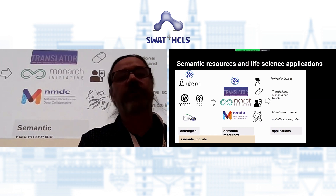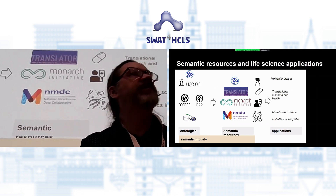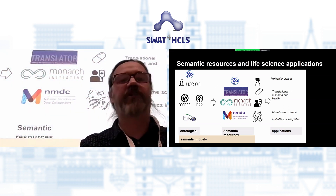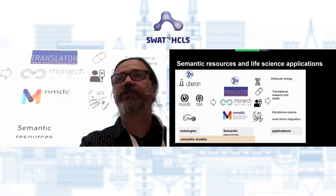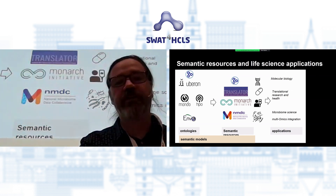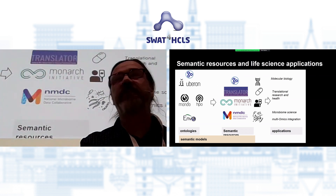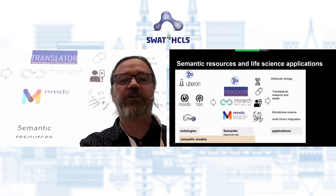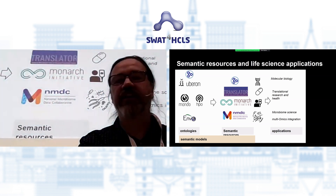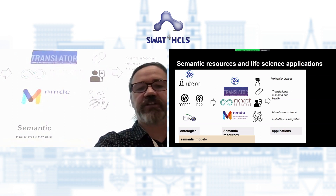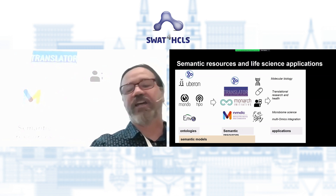I work on a number of other ontologies, including the Uberon multispecies anatomy ontology — a collaboration involving people in Switzerland as well, the BGI team, who are using Uberon to annotate gene expression data across about 50 different species. I also work on the Mondo disease ontology, the human phenotype ontology, and the ENVO environment ontology. We don't develop these ontologies just for their own sake. They're developed in combination with knowledge bases and semantic resources, such as the gene ontology knowledge base and the Monarch Initiative, which seeks to curate gene-phenotype data across a variety of species.